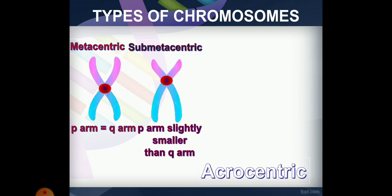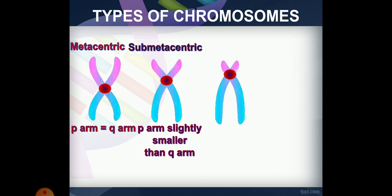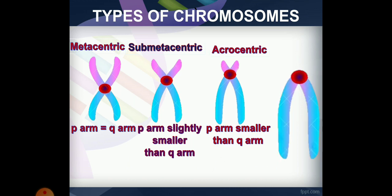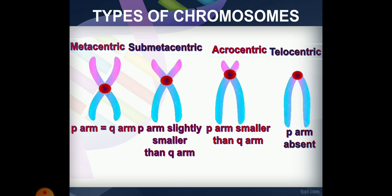The third type is telocentric chromosomes. In telocentric chromosomes, the P arm is very short and the Q arm is long. Telocentric chromosomes are absent in normal human beings.